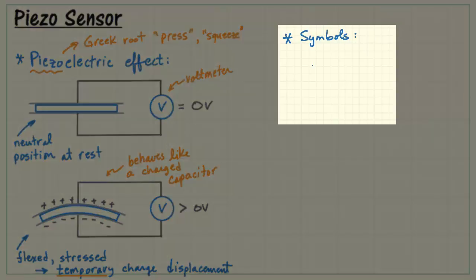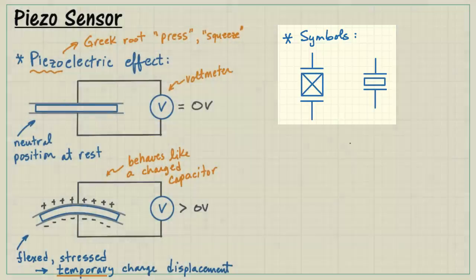I'll show you two standard symbols for the piezo sensor. One looks like this, where we have our pair of plates on either side, and we have the piezo material in between. Another standard symbol is a little more abbreviated, and it looks like this.